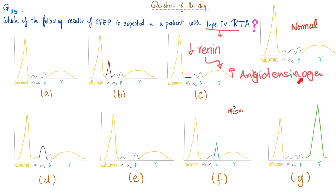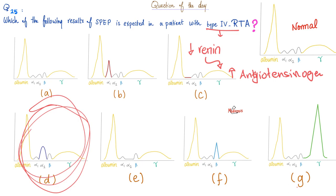Angiotensinogen is a protein. Is it albumin or globulin? It is globulin. Is it alpha-1, alpha-2, beta, or gamma globulin? It's an alpha-2 globulin. So which of these graphs shows an increase in alpha-2 globulin? The answer is D. Look at this increased alpha-2 as compared to normal.